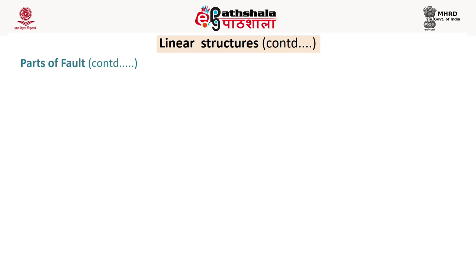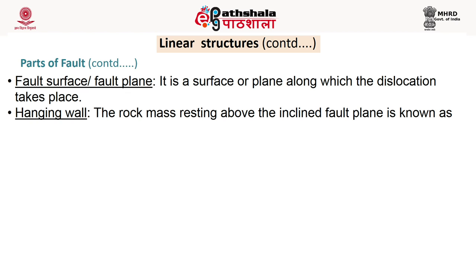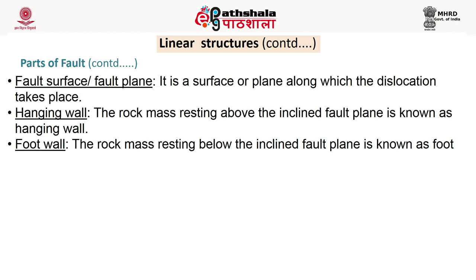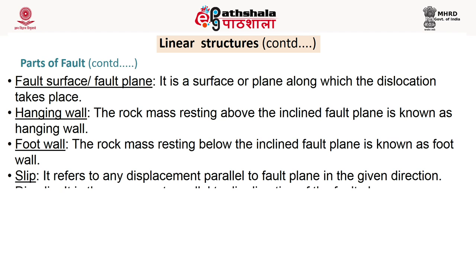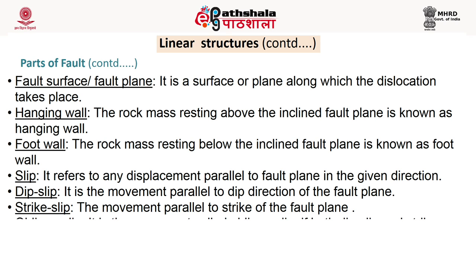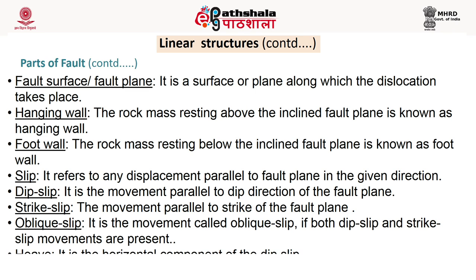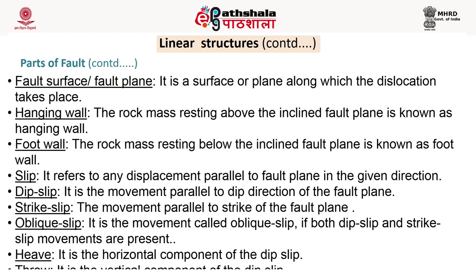Fault surface or fault plane is the surface or plane along which dislocation takes place. Hanging wall is the rock mass resting above the inclined fault plane. Foot wall is the rock mass resting below the inclined fault plane. Slip refers to any displacement parallel to the fault plane in the given direction. Dip slip is the movement parallel to the dip direction of the fault plane. Strike slip is the movement parallel to the strike of the fault plane. Oblique slip is the movement when both dip slip and strike slip movements are present. Heave is the horizontal component of dip slip, and throw is the vertical component of dip slip.